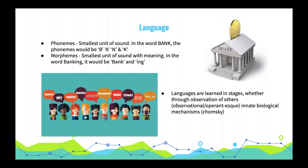Varying theories exist for how we learn language. Some say we learn through a variation of observation and copying others, mixed with positive reinforcement. Others, notably Noam Chomsky, argue we are born with innate language skills.